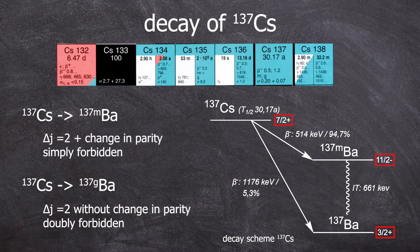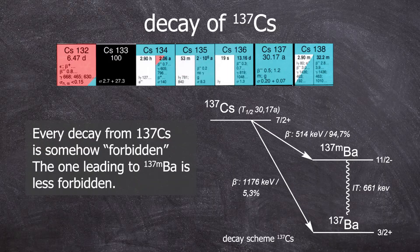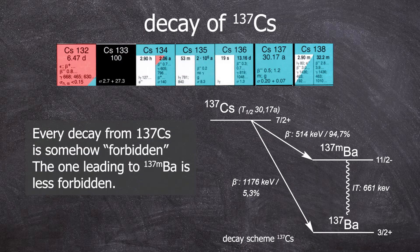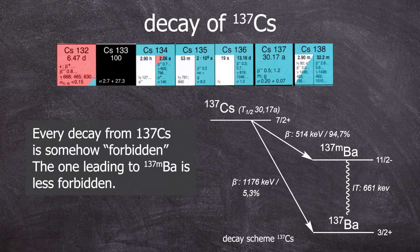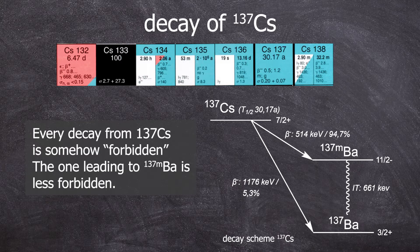Don't worry, there are tables for this. The key point is both transitions are somehow forbidden, but the one leading into the metastable barium-137M is less forbidden, which is why it happens 95% of the time. Because both transitions are forbidden, cesium-137 has a long half-life.